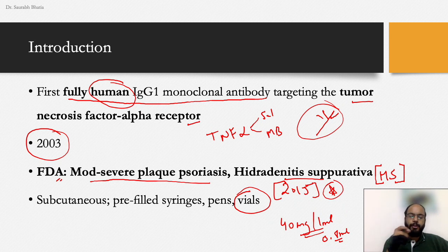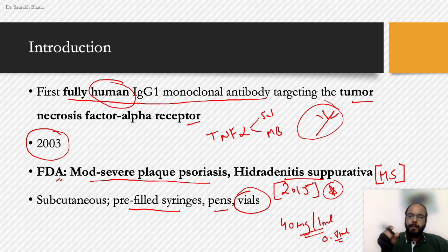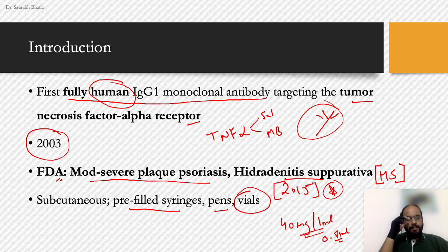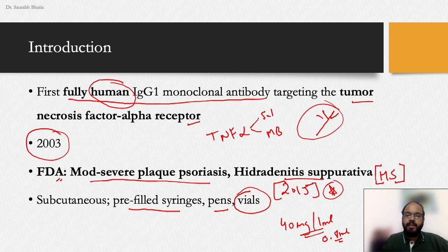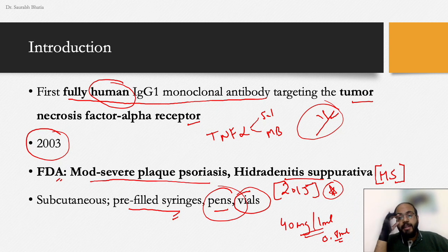Initially we would calculate the dose and inject the patient from vials, but now adalimumab comes in pre-filled syringes or pens. Syringes are glass and filled with the requisite amount — 40 mg or 80 mg. Pens have a self-injecting mechanism where you press a button and the whole drug is delivered. Nowadays it is mostly available as pens, with pre-filled syringes being slowly phased out.